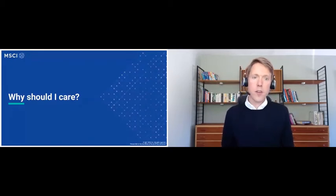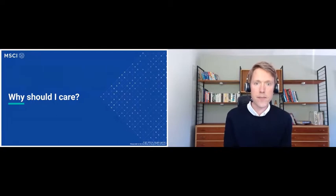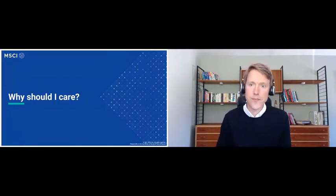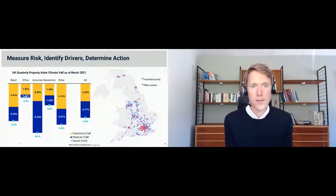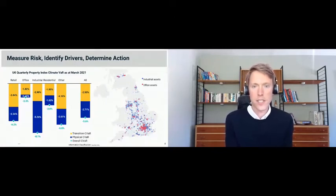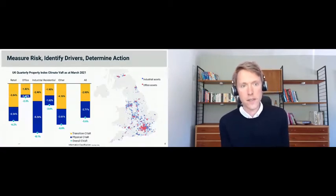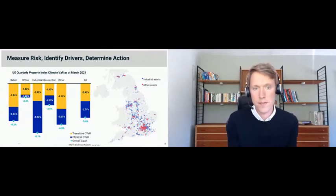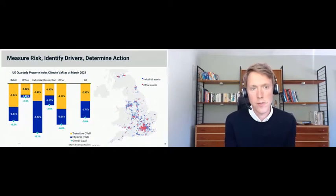That's a brief overview of climate risk and how we go about measuring it. I'll give a few examples of the kind of analysis that can be done at portfolio and asset level, and how you might use these metrics in portfolio analysis, portfolio management, and reporting to clients or regulators. The first chart is around measuring the risk. By measuring the risk, we can identify the drivers and think about how to determine action to mitigate those risks. This is looking at data from our UK quarterly property index — taking every single asset and calculating the climate value at risk, both from transition risk and physical risk, aggregating up to the index level and reporting numbers across different property use types.